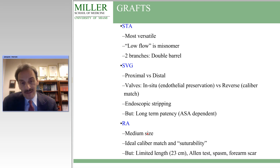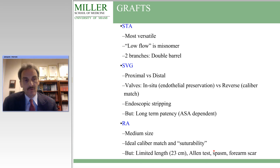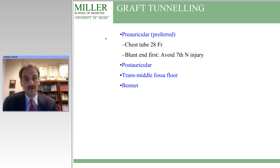Radial artery bypasses are generally medium in size. They are the ideal caliber match and offer good suturability for most intracranial vessels, but they are limited in length to about 23 centimeters. You certainly have to do an Allen test to document that the radial artery is not essential to the circulation of the hand. They can go into spasm post-op and of course there is a forearm scar.